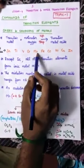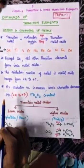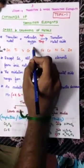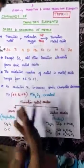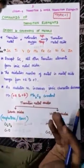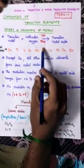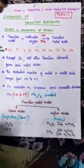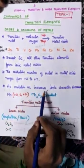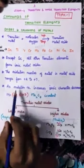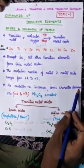For example, in the middle of the series we have Manganese, which contains oxidation numbers from plus 2 to plus 7: plus 2, plus 3, plus 4, plus 5, plus 6, plus 7. It has a large variety of oxidation states. As the oxidation number increases, its ionic character decreases.